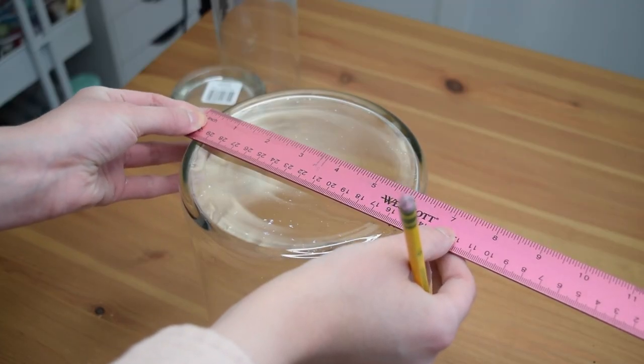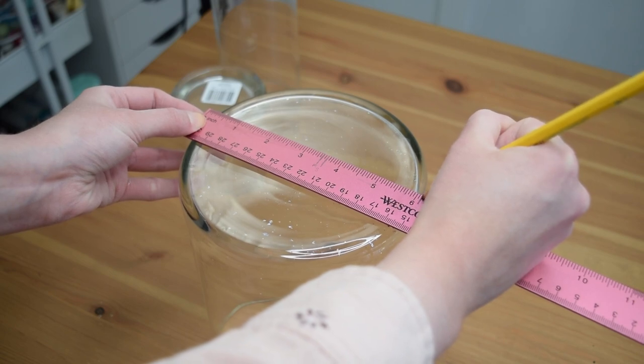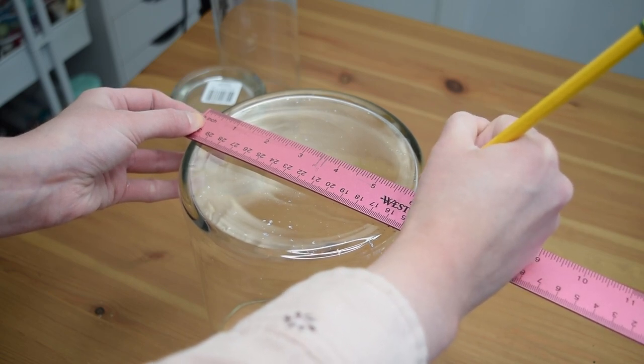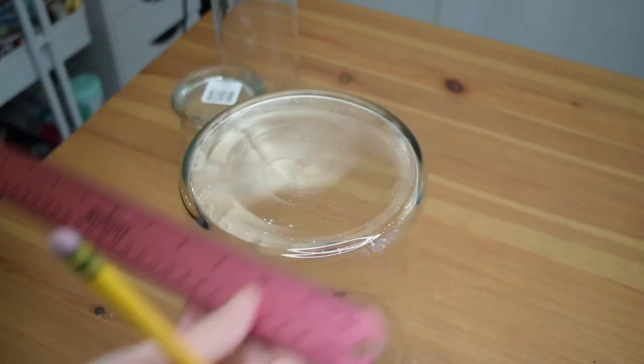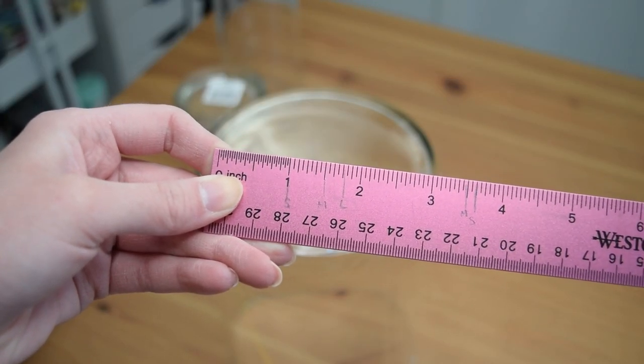Then once I got that diameter measurement I added on an additional inch and a half. This is going to ensure that you're going to have enough room to make that miter cut that you're going to be creating and it's also going to give you a little extra wiggle room just in case your measurements aren't perfect.